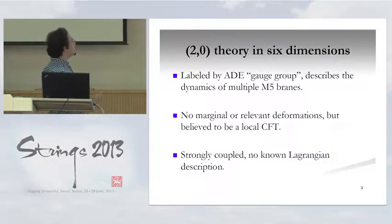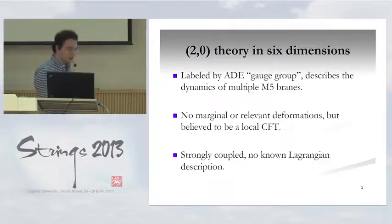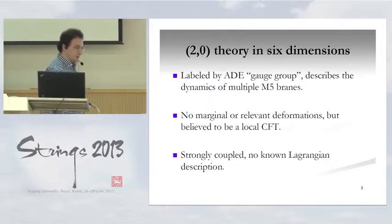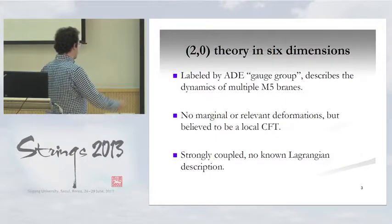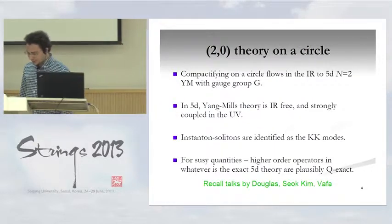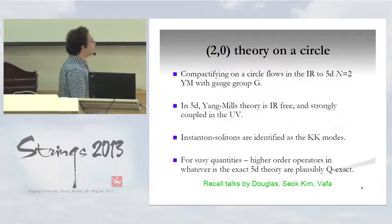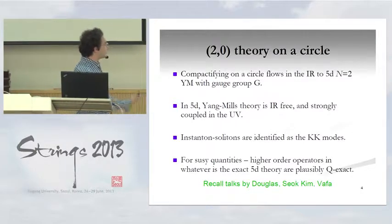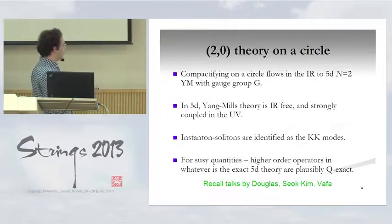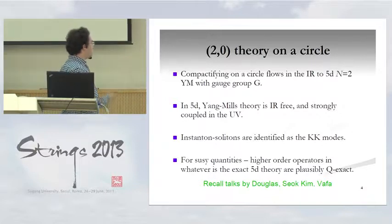We heard a lot earlier in the conference about the 2-0 theory in 6 dimensions. It's labeled by some ADE group and describes the dynamics of multiple five-branes. It has no marginal or relevant deformations, but we think it's a local conformal field theory. It's strongly coupled and doesn't have any Lagrangian description. One of the things we do know about it — which is the main technique I'll use — is that if you put it on a circle, it flows at low energies to the 5D maximally supersymmetric Yang-Mills with the ADE gauge group. This theory in five dimensions is free in the infrared, weakly coupled, but strongly coupled in the ultraviolet and looks non-renormalizable. We even heard that maybe it could completely describe the 2-0 theory.